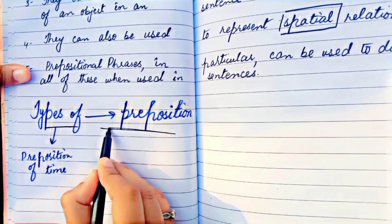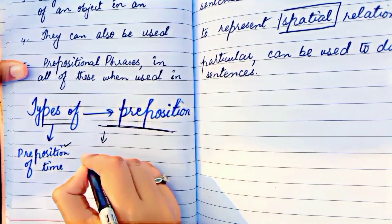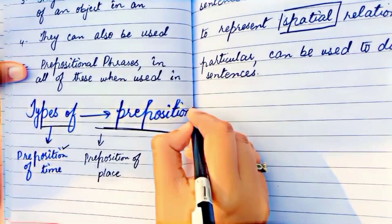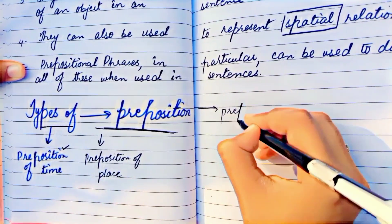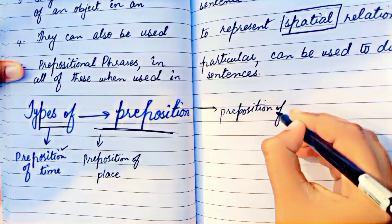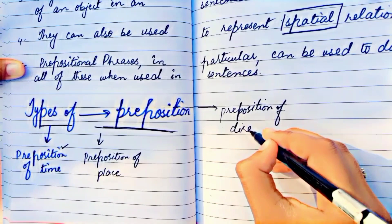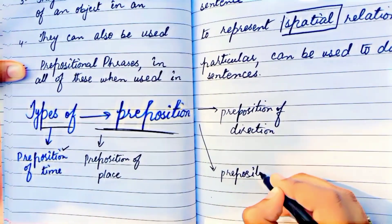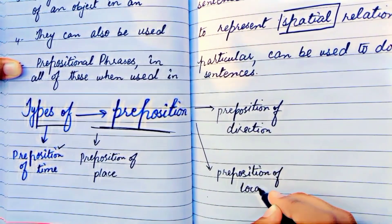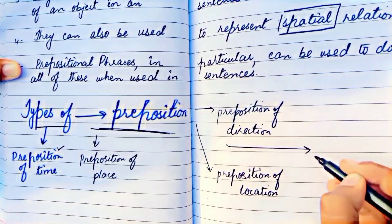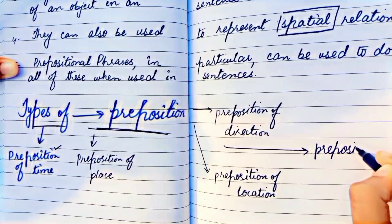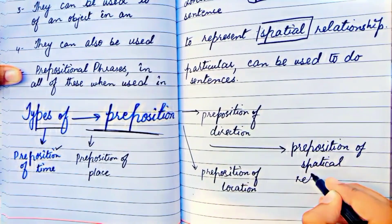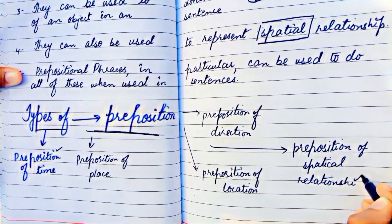Now, basically there are five types of prepositions which we have to discuss: prepositions of time, prepositions of place, prepositions of direction, prepositions of location, and the fifth one is prepositions of spatial relationship.